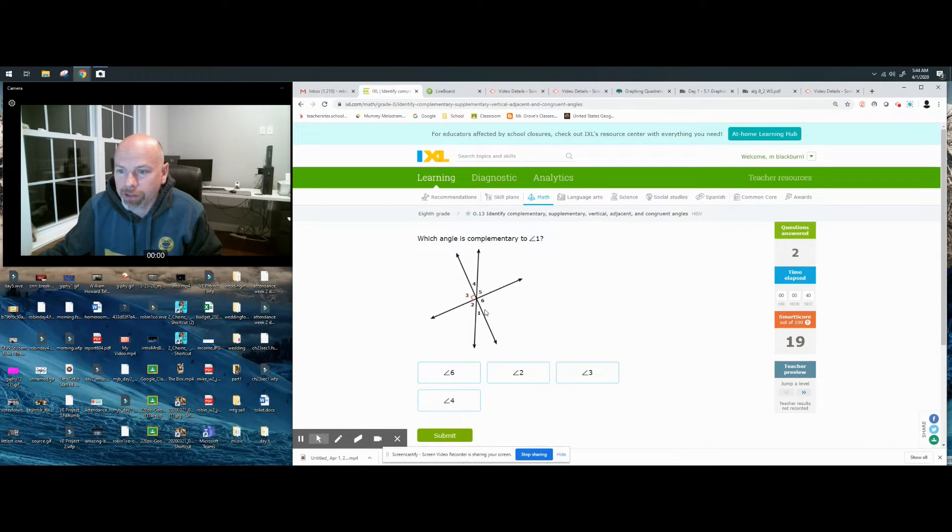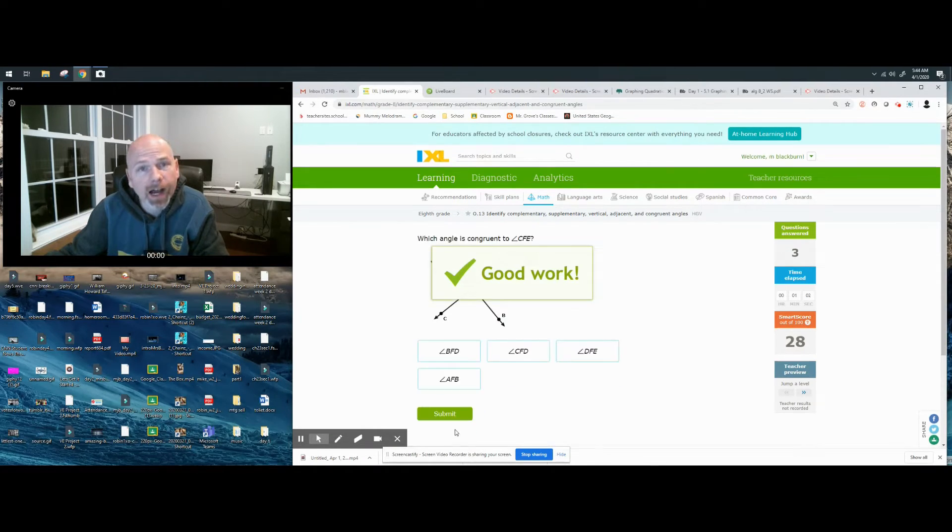Okay, complementary to angle one. So here's angle one. Complementary - what would make this? This needs to form a right angle. I'm thinking it's going to be two. Angle one and angle two, if we put those together, that would make a 90-degree angle. They're complementary.